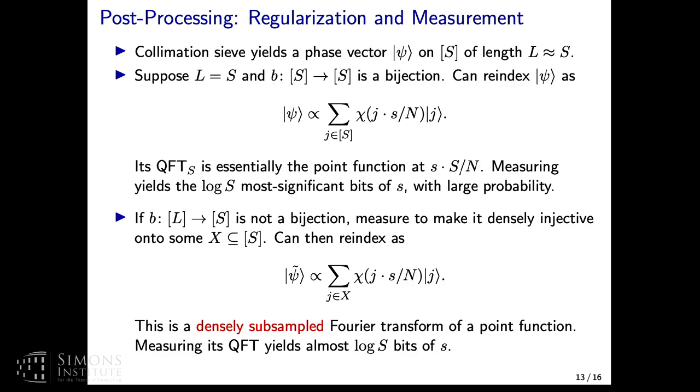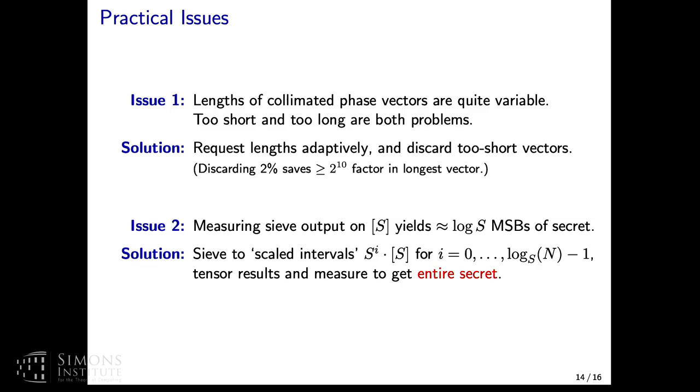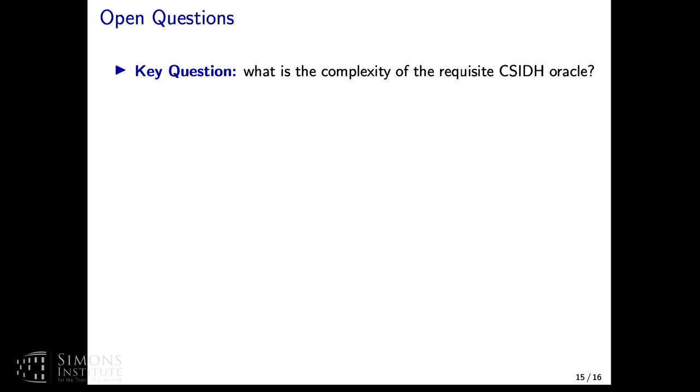I will skip the regularization and measurement part, but basically it says once you get a phase vector with very small multipliers, roughly the same size as the length, then you can do a QFT to extract about log S bits of the secret. So you get several bits of the secret out at a time, and then you can run the sieve more times to get more of the bits of the secret out. There's some practical issues that came up in the simulations, which are not terribly interesting from a theoretical point of view, but to make the thing actually run, we have to address these.